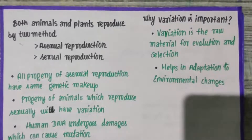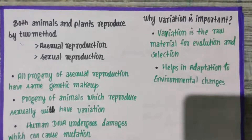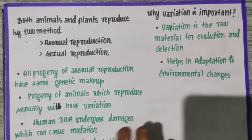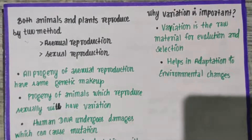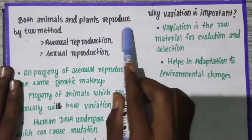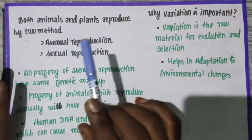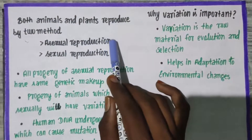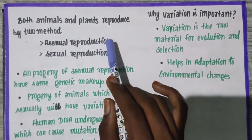Welcome to Zipto. We will start heredity and evolution. First, the important points which you have to discuss: both animals and plants are reproduced by two methods — asexual reproduction and sexual reproduction.